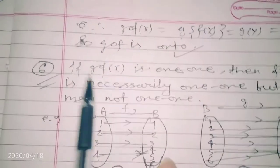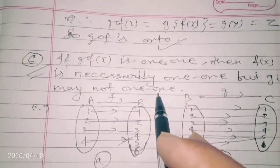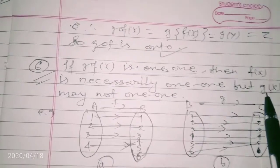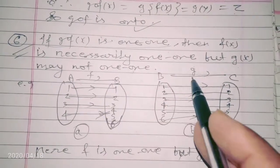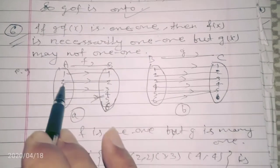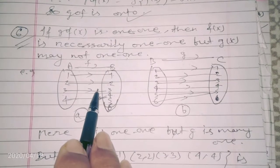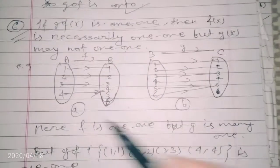The sixth property: if gof is one-one, then f is necessarily one-one. But g may not be one-one. This is very important. Even if g is not one-one, gof can still be one-one, so we cannot conclude anything about g. Let's verify with an example: set A = {1,2,3,4}, set B = {1,2,3,4,5,6}. Function f maps 1→1, 2→2, 3→3, 4→4, so f is one-one.